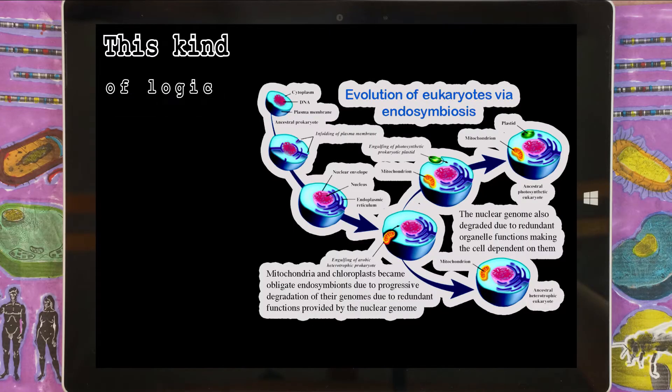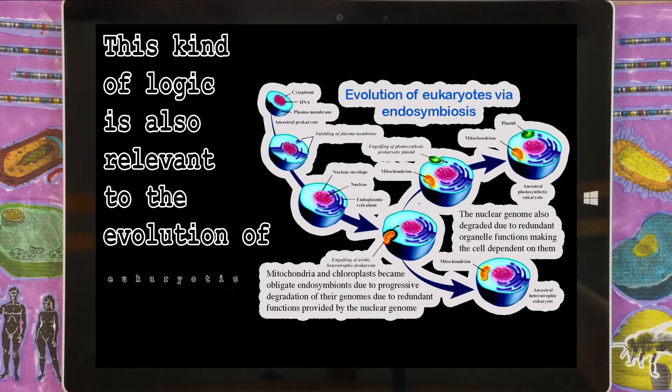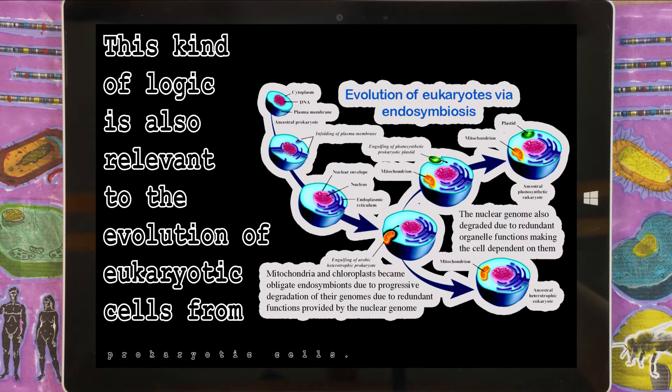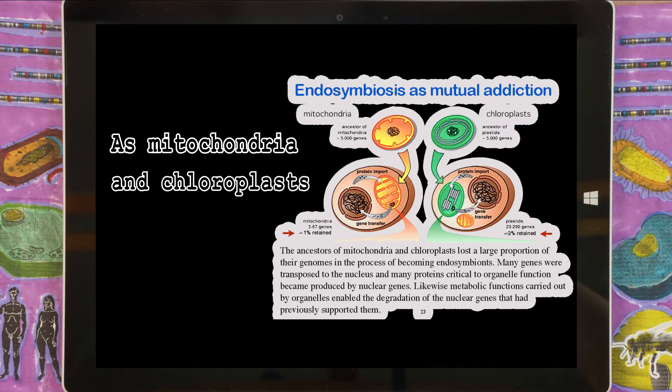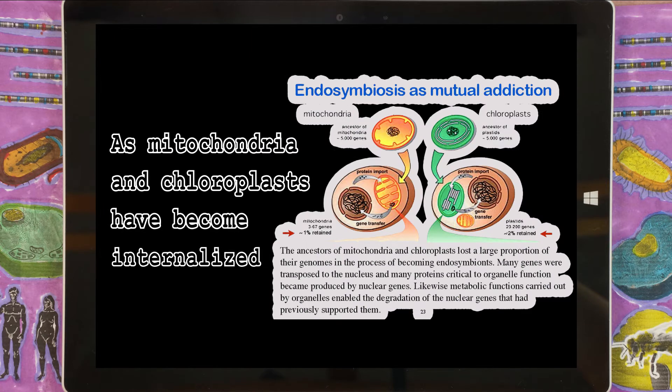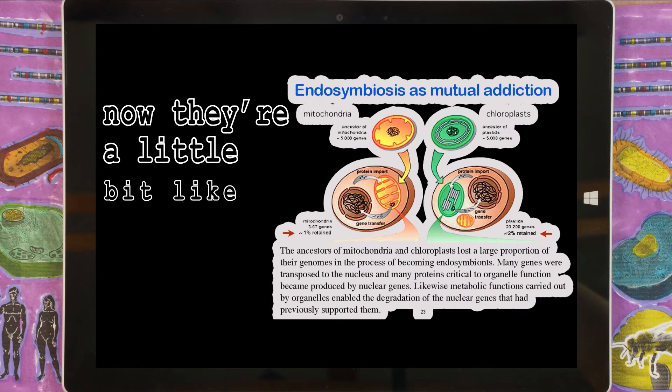Endosymbiosis. This kind of logic is also relevant to the evolution of eukaryotic cells from prokaryotic cells. As mitochondria and chloroplasts became internalized into a cell, they are a bit like duplicate genes. When the mitochondria and chloroplasts were independent from their hosts, they each had autonomous metabolisms — both the host and the symbiont had all the genes they needed to get by. But once they started living closer together, you had two redundant metabolisms performing the same function. And so they degraded, and then synergies emerged.